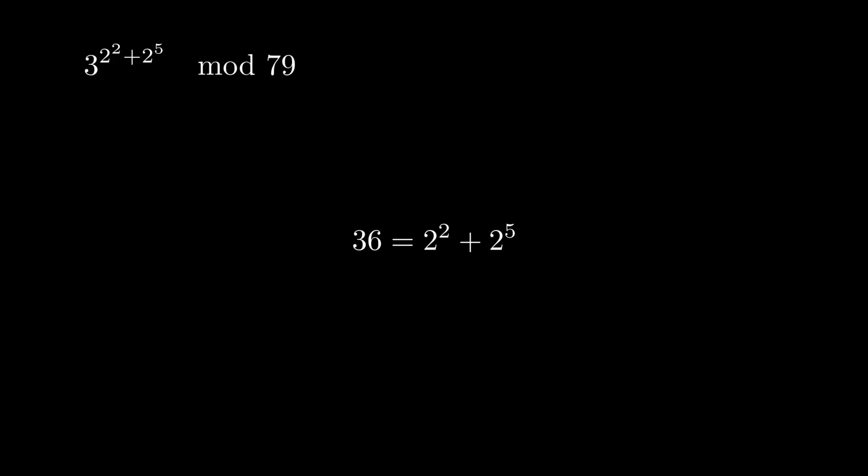Then we replace the original exponent with this new expansion, and using properties of the exponent, we can represent this as 3 to the 2 to the 2 times 3 to the 2 to the 5. Notice, and this requires a little bit of insight, that in the general case of b to the 2 to the i, if we square this, then we get b to the 2 times 2 to the i, which is the same as b to the 2 to the i plus 1.